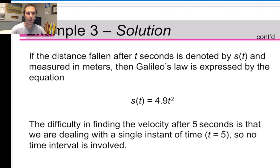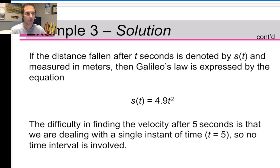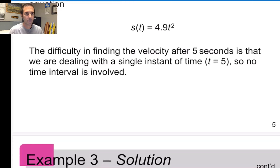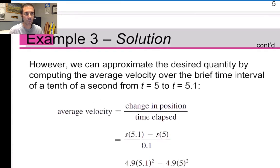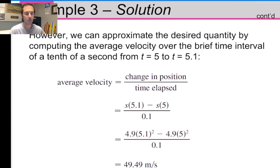Distance, measured in meters, is given by this equation if we ignore wind resistance. So in a vacuum, our position can be calculated using this formula: 4.9 times the number of seconds squared. The difficulty in finding the velocity after five seconds is that we don't have a velocity equation — we're looking at a position equation. We don't have any designated time intervals, so in order to estimate the velocity, we're going to use the formula for calculating average velocity.